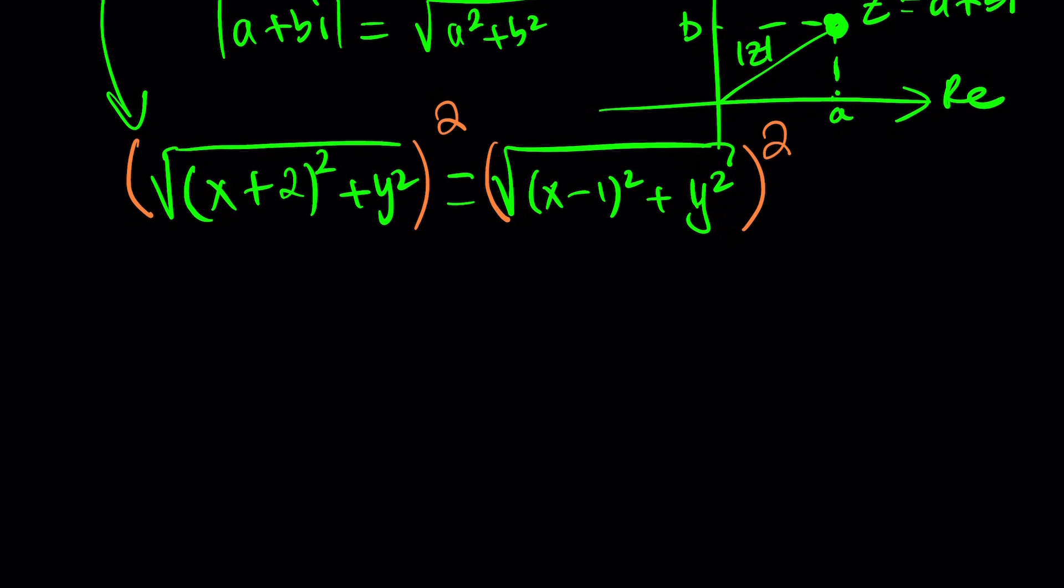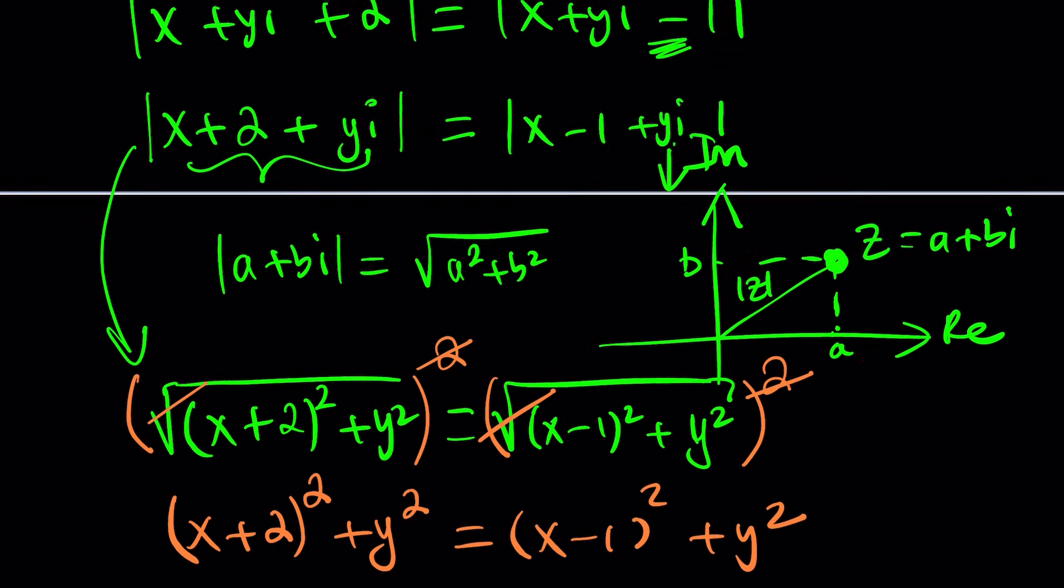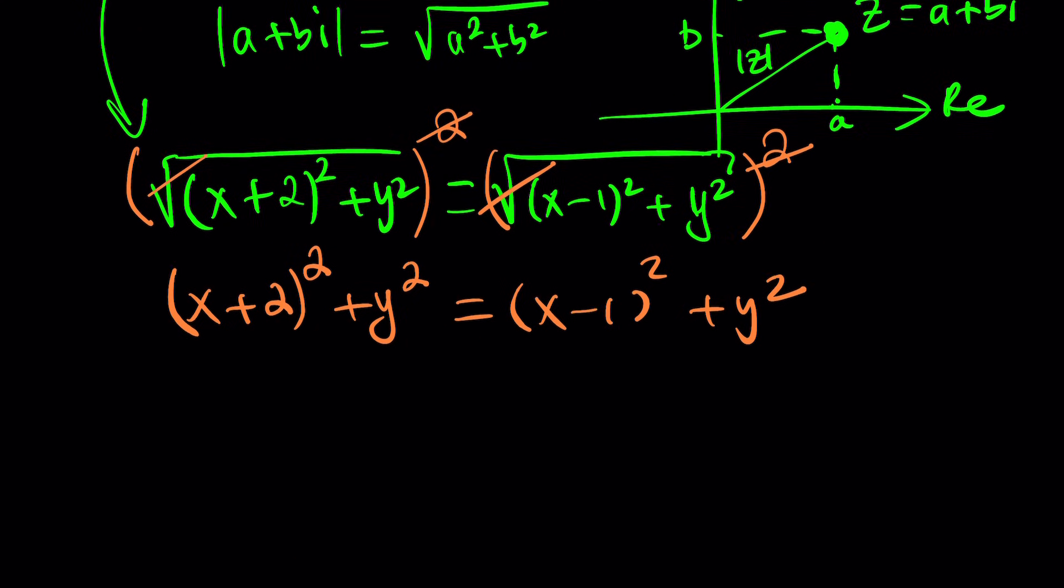And when we square both sides, obviously the square root and the square will kind of cancel out in a non-reverse way. And then we end up with X plus 2 squared plus Y squared and X minus 1 squared plus Y squared. And guess what? Y squared cancels out because it's the same on both sides. Is that cool? You know what that means? It means that we're going to end up with X only. Does that mean there is going to be a finite number of solutions?